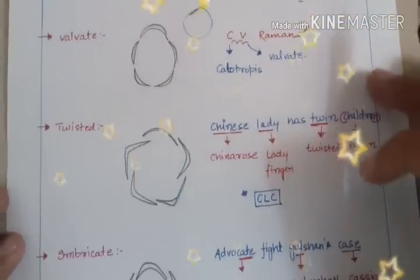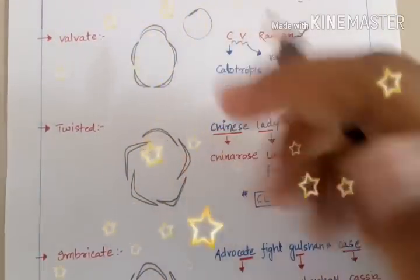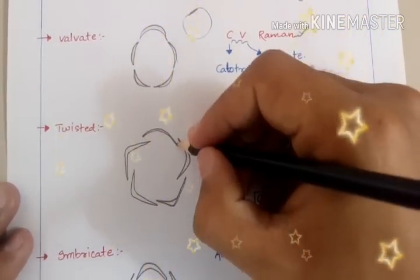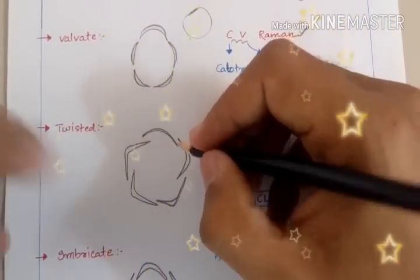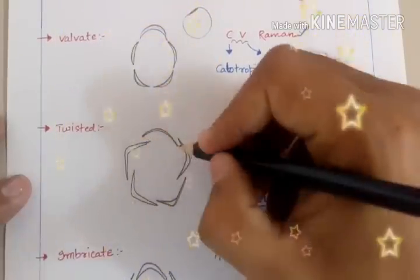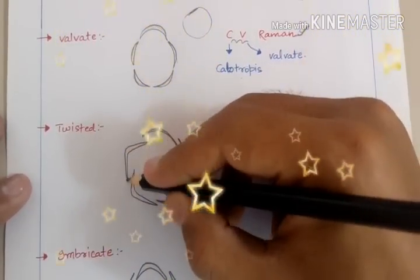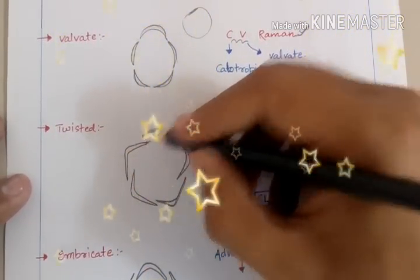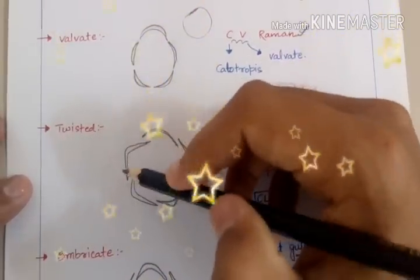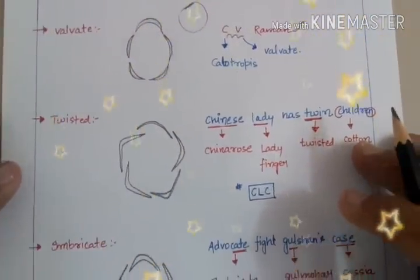The next kind of Estivation is Twisted. As the name indicates, one side of a particular petal or sepal will be twisted and will be above the adjacent sepal, while one side will be below the other sepal. So one side is above another and one side is below — all sepals are arranged this way. This particular arrangement is known as Twisted Estivation.